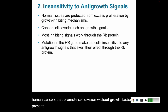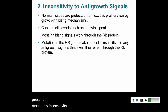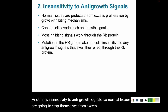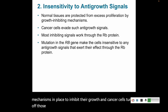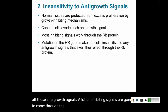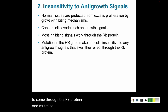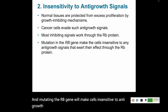The second hallmark is insensitivity to anti-growth signals. Normal tissues stop themselves from excess proliferation by having mechanisms in place to inhibit their growth. Cancer cells turn off those anti-growth signals. A lot of inhibiting signals go through the RB protein, and mutating the RB gene makes cells insensitive to anti-growth signals and allows those cells to grow.